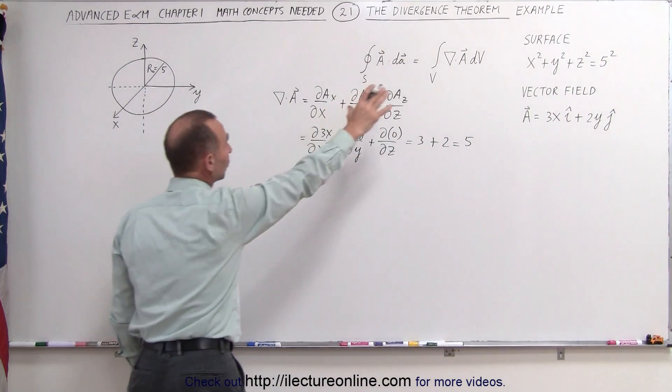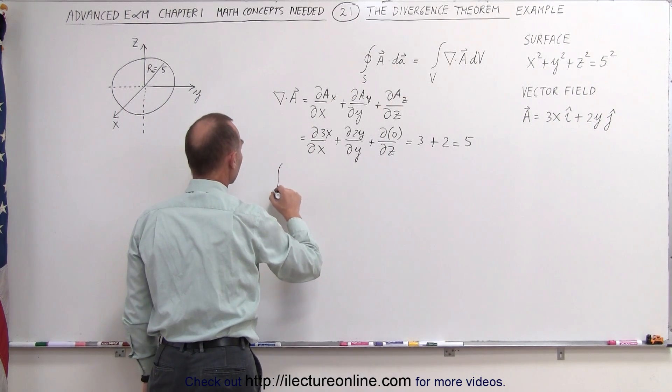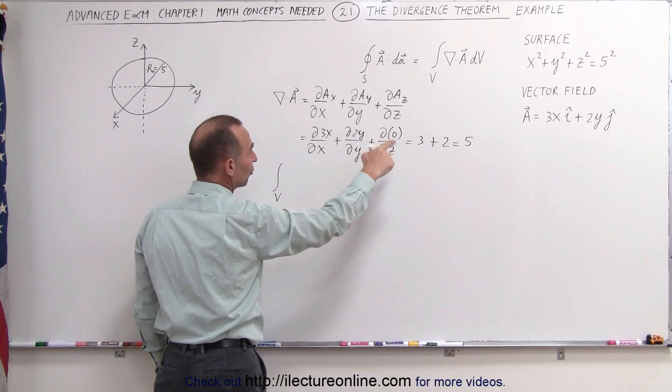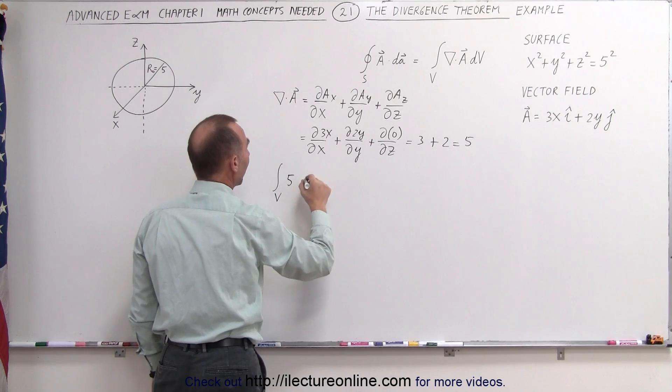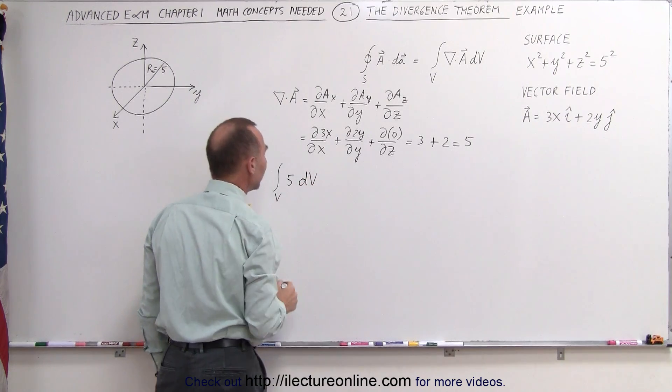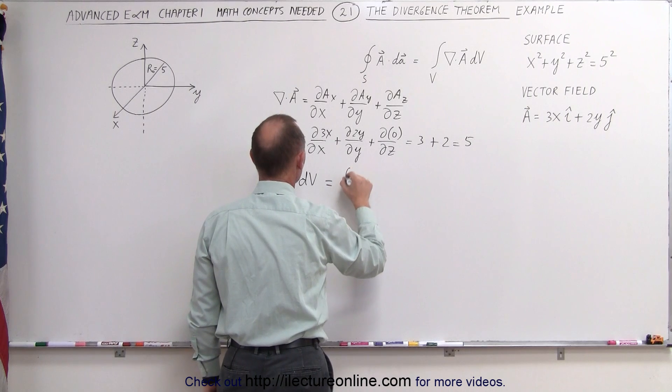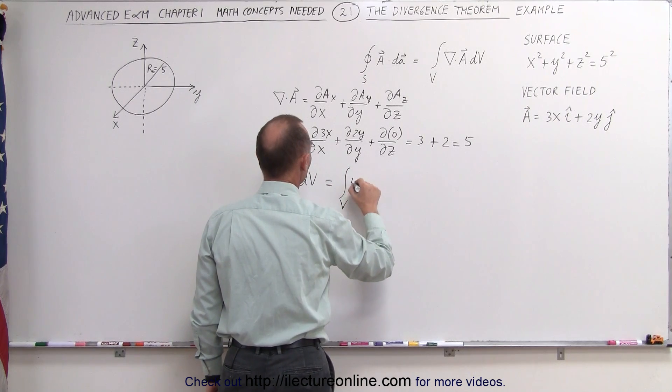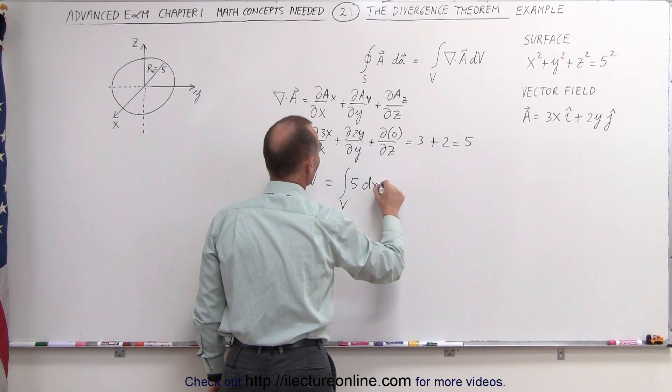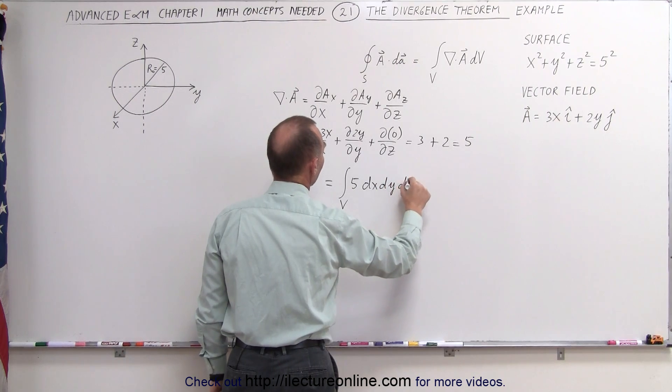Then going ahead and doing that integral, the volume integral of the divergence of A, which is equal to 5, times dv, and in the Cartesian coordinate system, that will look as follows. This would look as the triple integral of 5 times dx, dy, and dz.